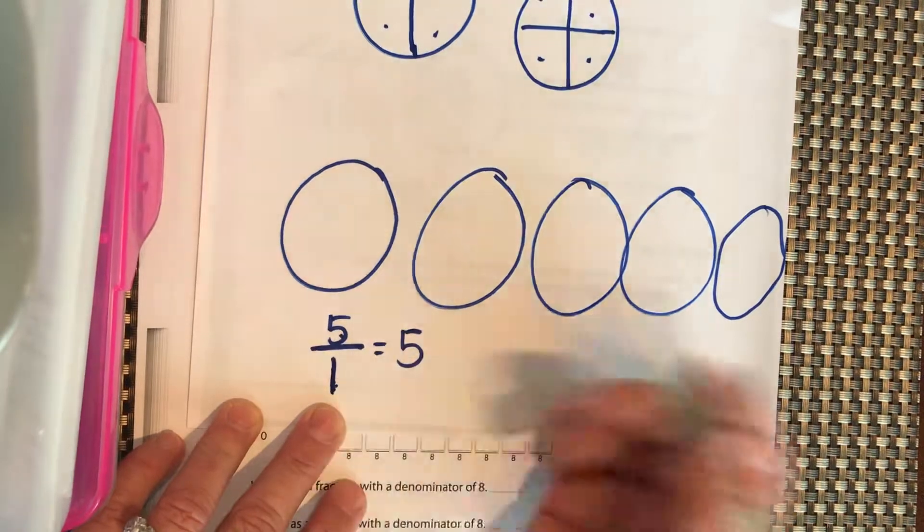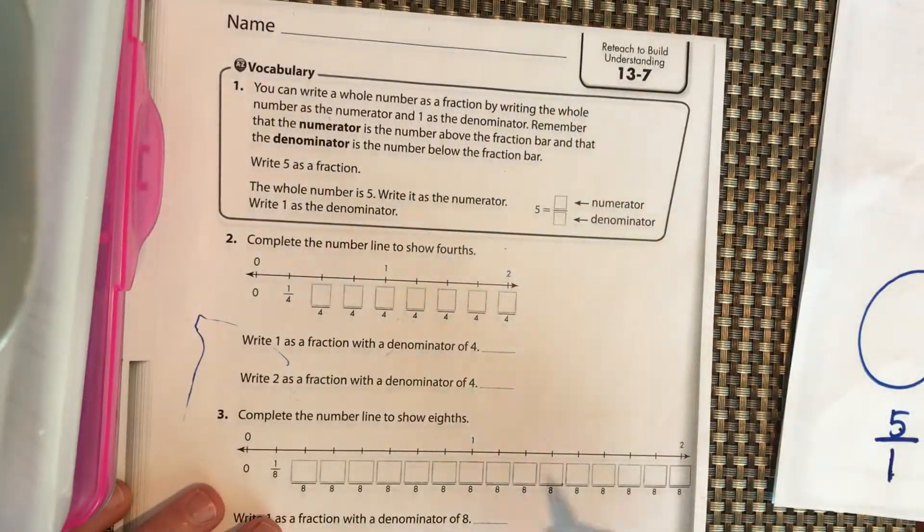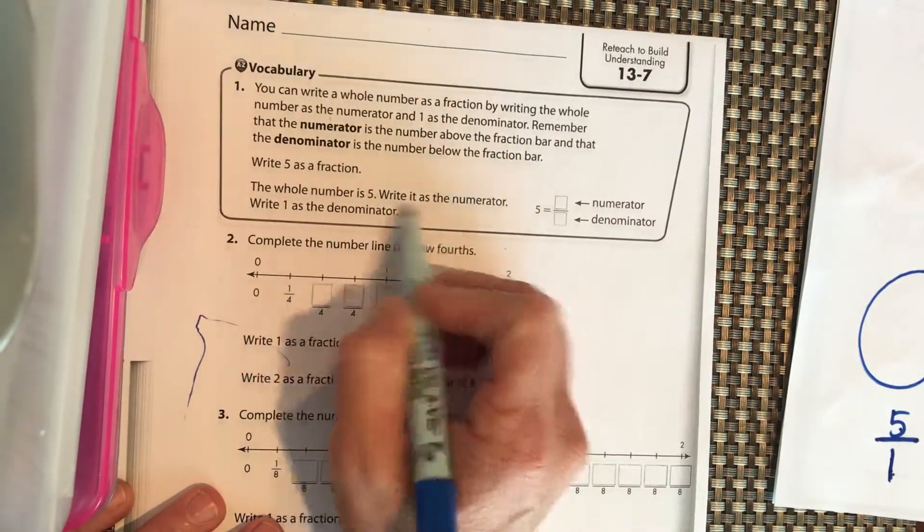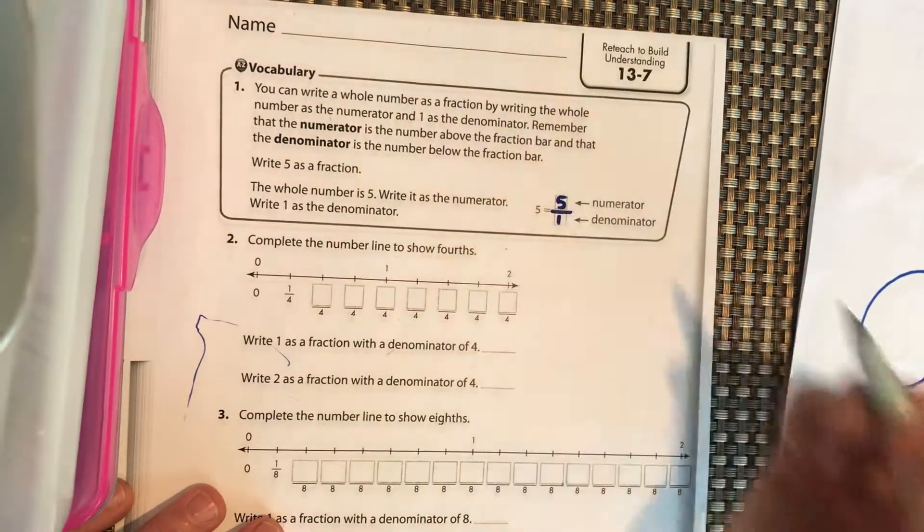Think of it as division. 5 divided by 1 is 5. So write 5 as a fraction. The whole number is 5, so we're going to write it as the numerator, and our denominator is 1.